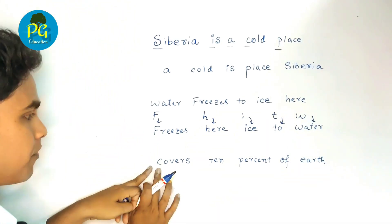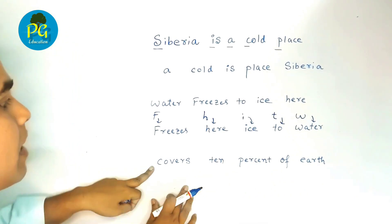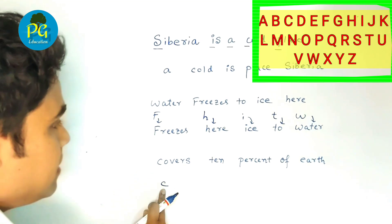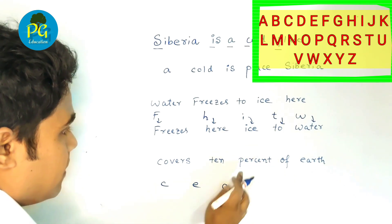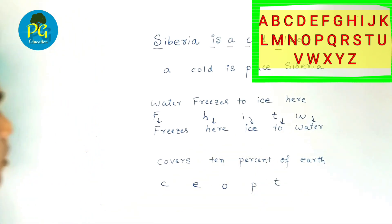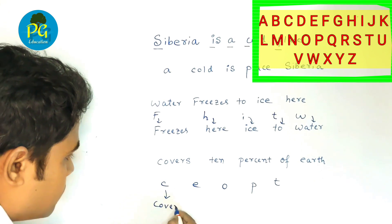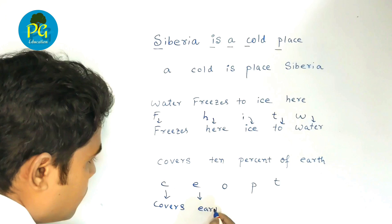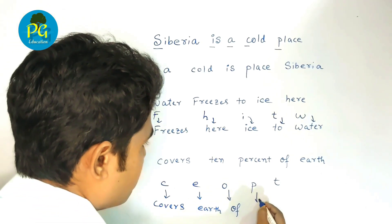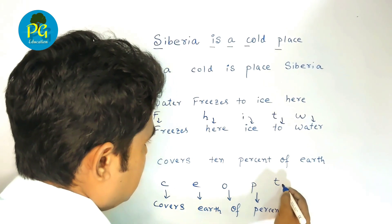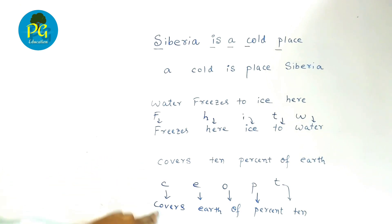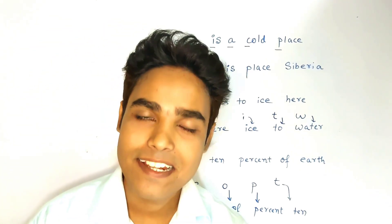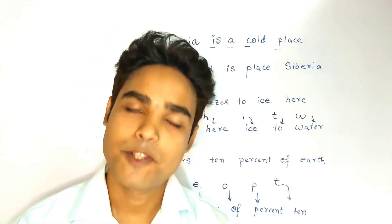So for the statement 'covers 10% of earth', we arrange the first letters alphabetically: C, E, O, P, T — giving 'covers earth of percent 10'. The correct option is option B. So friends, see you soon with some new video and a new topic. Till then, goodbye.